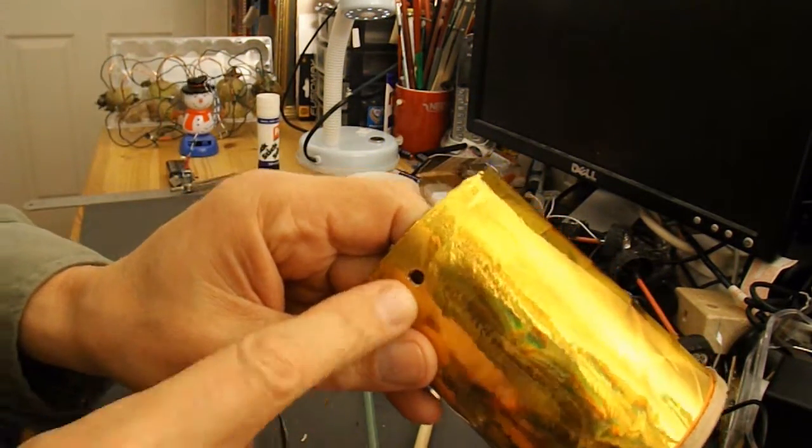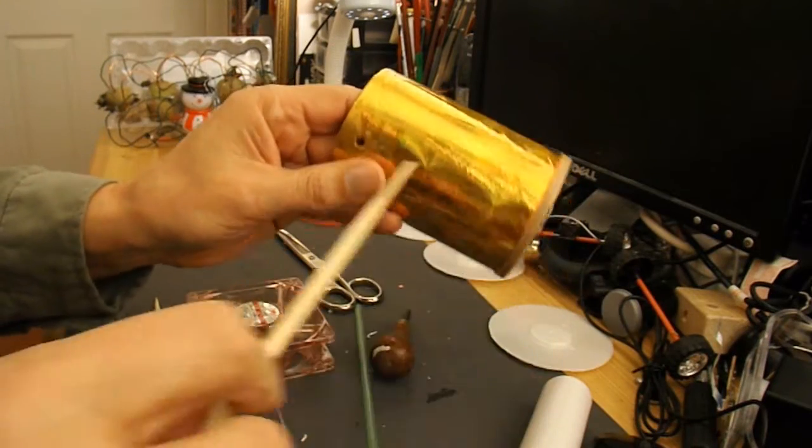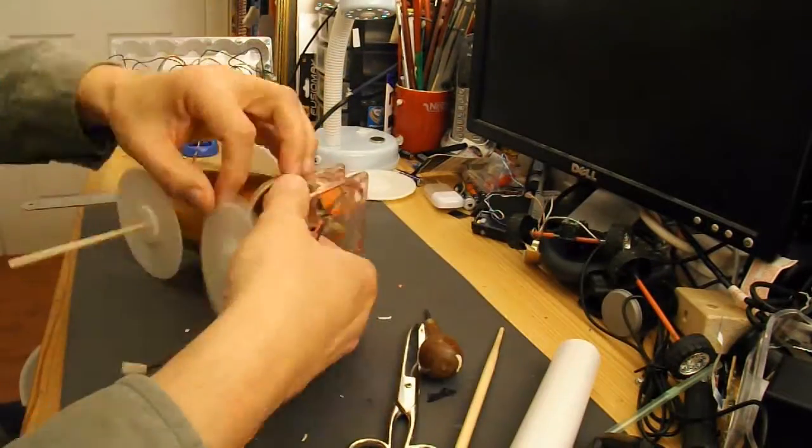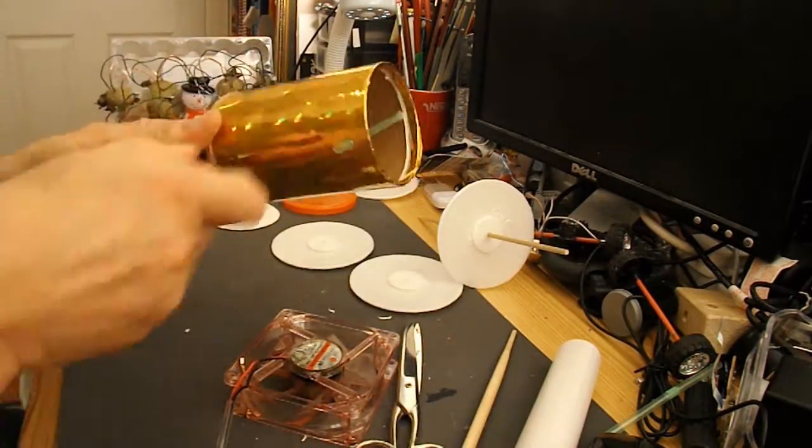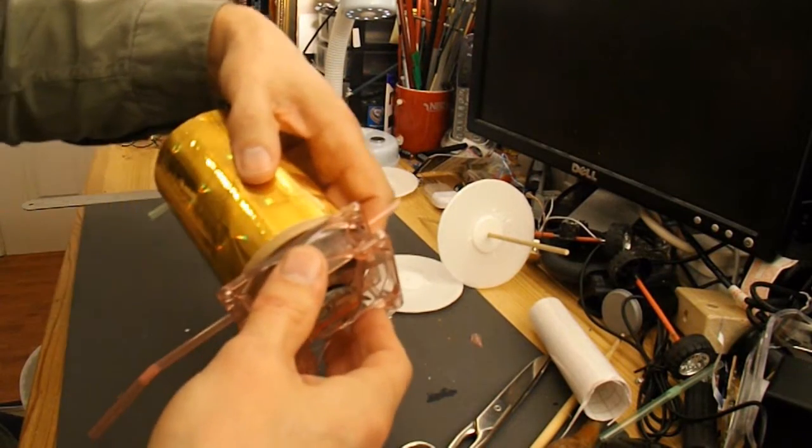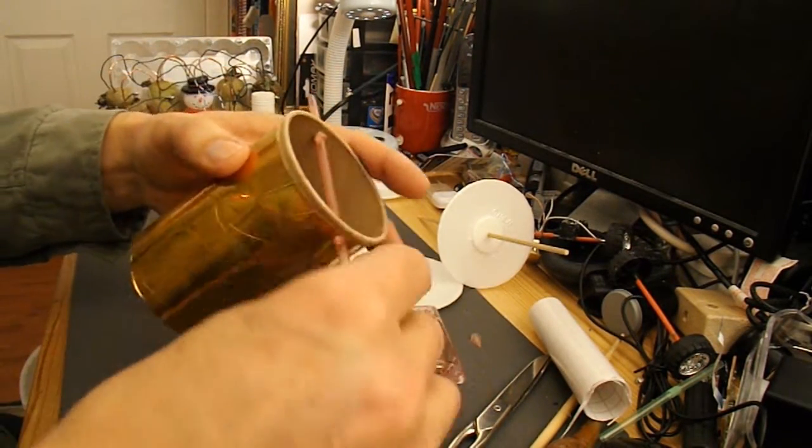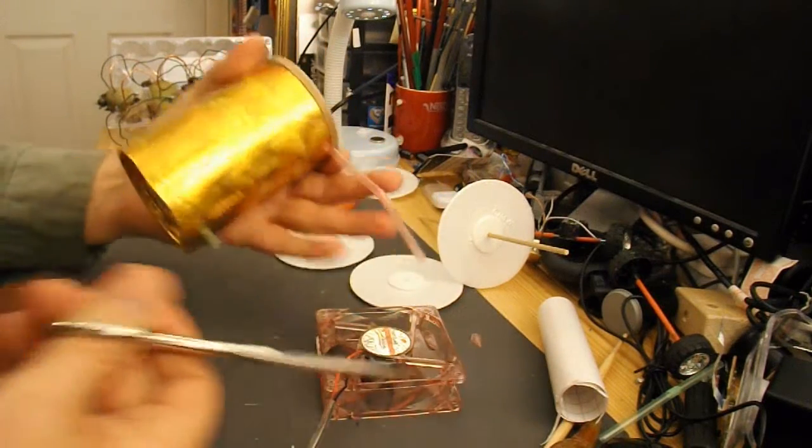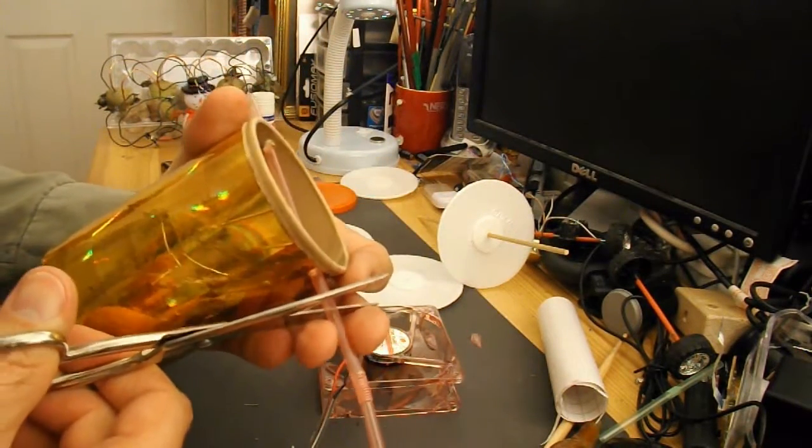I've just put some holes through for the axle. By using the drinking straw to hold the axle, I can make sure the wheels are far enough to clear the electric motor.